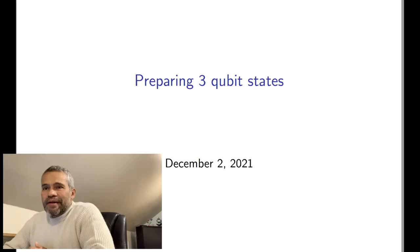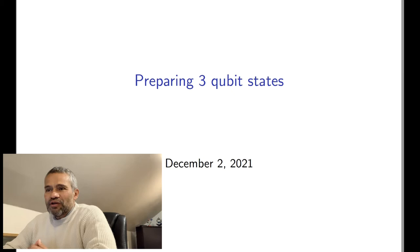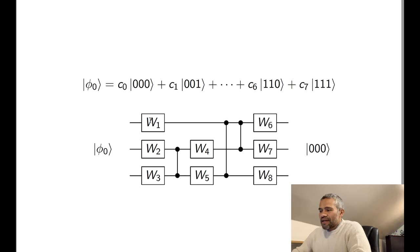In this video, we will explain how to prepare any 3-qubit state. Essentially, we are going to show explicitly local gates W1 up to W8, such that for any 3-qubit state, this circuit holds true.